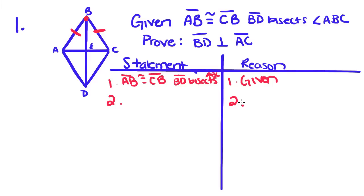You're probably wondering how do we prove that these lines are perpendicular. To do that, we have to prove that they form right angles. To do that, we're going to try to get those angles to be congruent. First we're going to try to get these triangles congruent, which is always a good place to start if you're not really sure which direction to go when proving something. If there are triangles, you probably want to get them congruent.